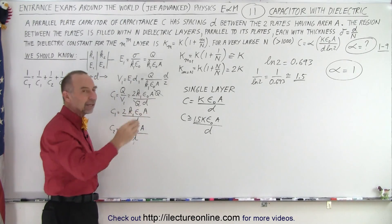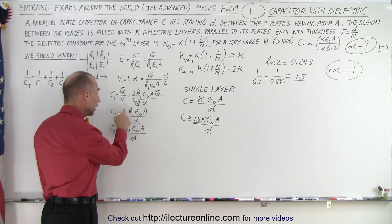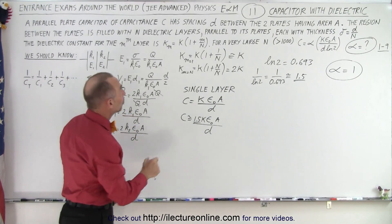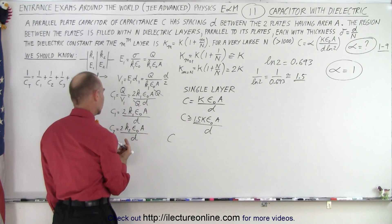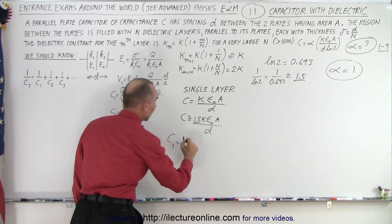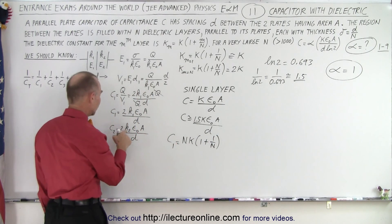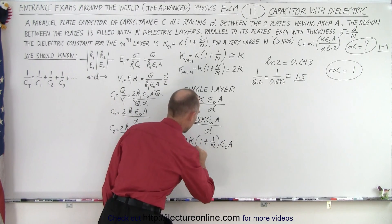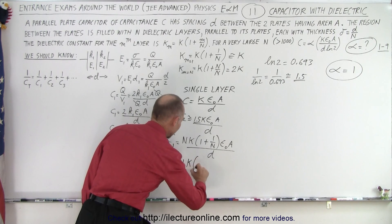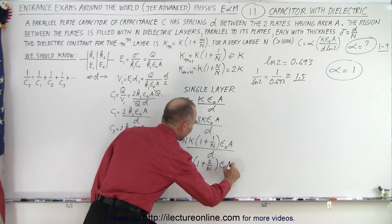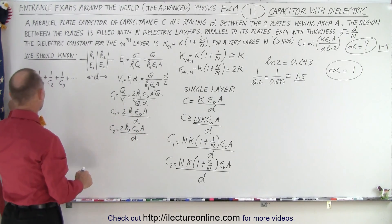But this is such an interesting problem that let's explore it further. For N layers, each individual capacitance C_m equals N times K·(1 + m/N)·epsilon_0·A/D. So C_1 uses the first layer's dielectric constant K(1 + 1/N), C_2 uses K(1 + 2/N), and so on. To find the total capacitance you then solve the series combination across all layers.